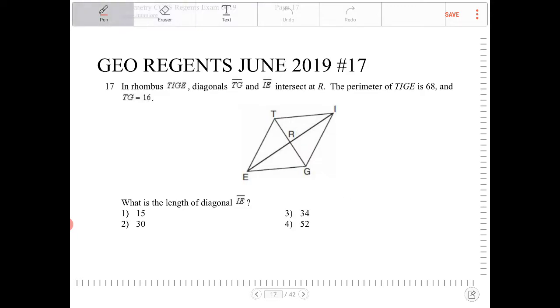Because this is a rhombus, there are properties that we should be aware of. A rhombus is actually a parallelogram, so all opposite sides are going to be congruent. And not only that, a rhombus is a parallelogram where all the sides are congruent.